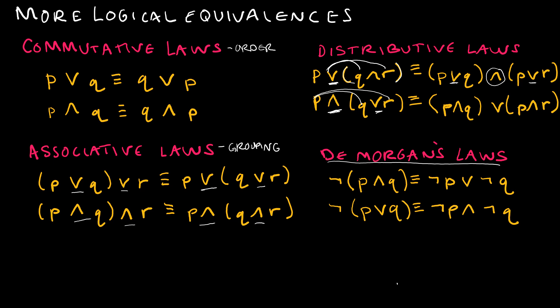And then we have DeMorgan's laws, and again, we're going to use these quite often. And it deals with negating a compound proposition. So if I'm negating an and, then I end up with not P or not Q. And if I'm negating an or statement, then I end up with not P and not Q.